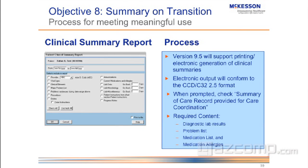When prompted, check summary of care — the record provided for care coordination. Here's the required content: diagnostic lab results, problem list, medication list, and medication allergy. All those things have to be on the summary when you're sending it to another provider.